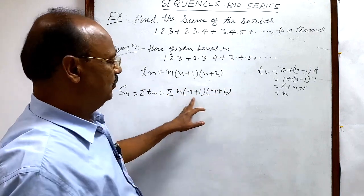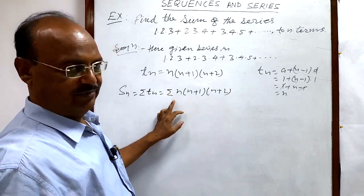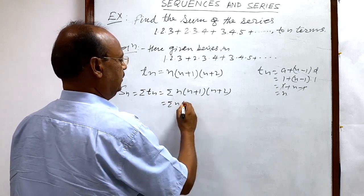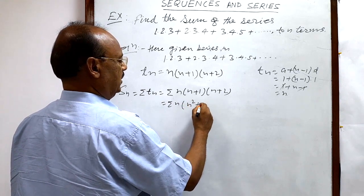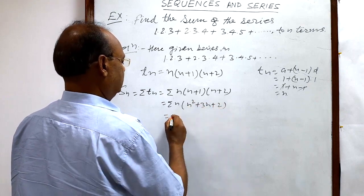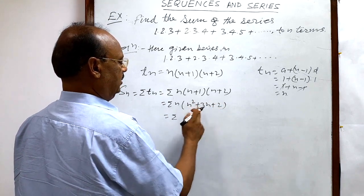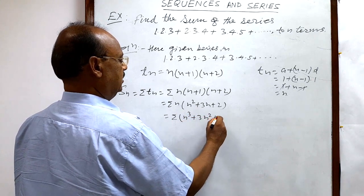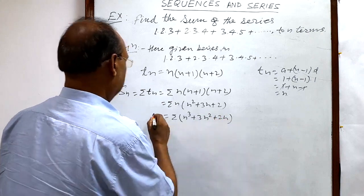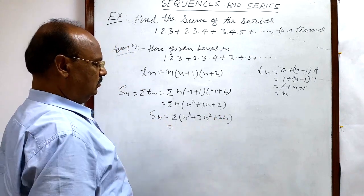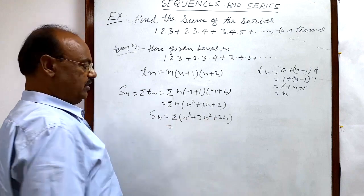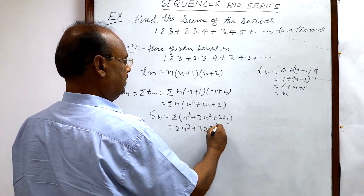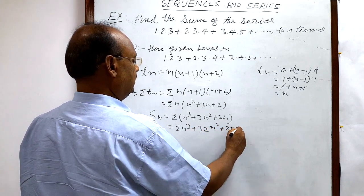We have to multiply these factors before applying sigma. The product (n+1)(n+2) = n² + 3n + 2, and multiplying by n gives n³ + 3n² + 2n. So Sₙ = Σ(n³ + 3n² + 2n). Since sigma is distributed over all terms, this becomes Σn³ + 3·Σn² + 2·Σn.